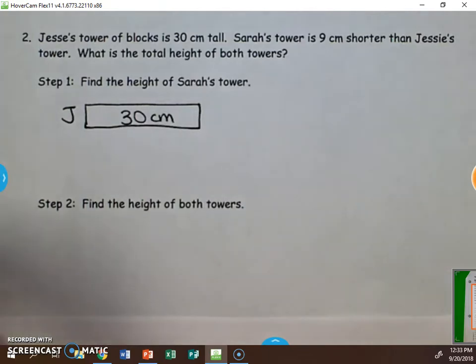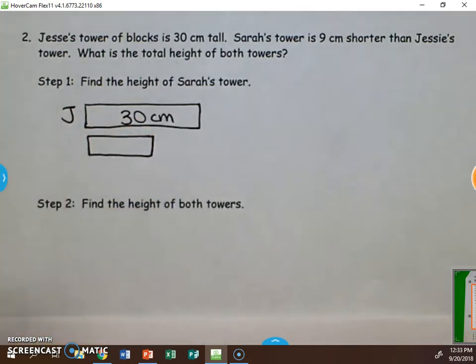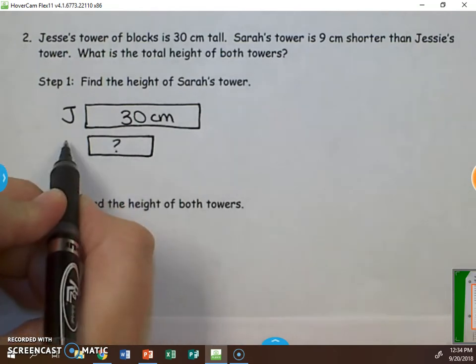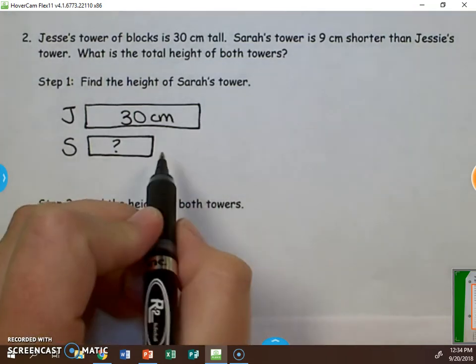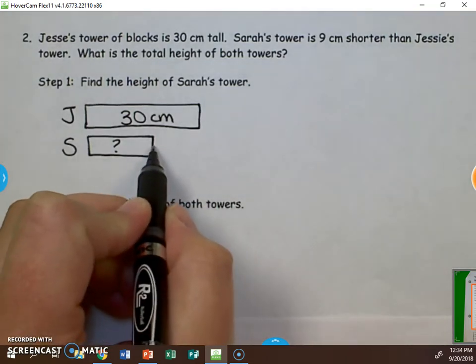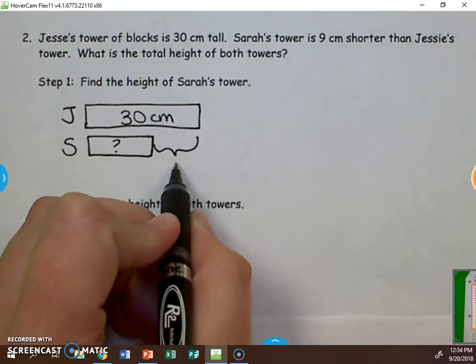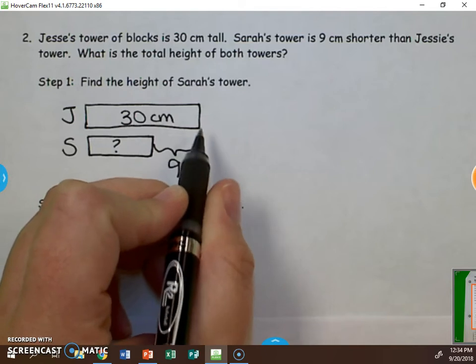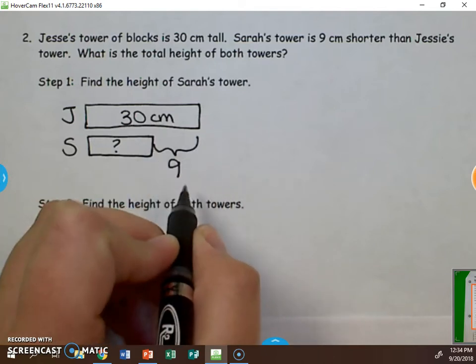Next, we need to draw Sarah's tower. We don't know how long Sarah's tower is. So we're going to put a question mark here in Sarah's rectangle. We do know that the tower is 9 centimeters shorter than Jesse's. So we draw some kind of symbol here to show from the end of Jesse's to the end of Sarah's tower equals 9 centimeters.